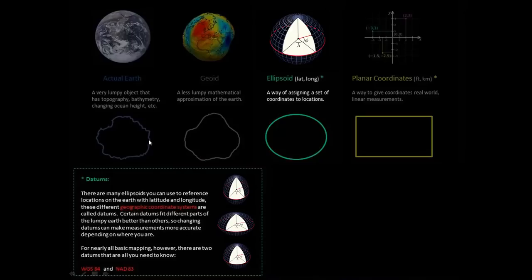And the two datums that we use are WGS84, which tries to fit the entire world as best as it can, and it stands for the World Geodetic System, and it was done in 1984.